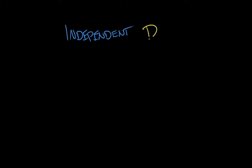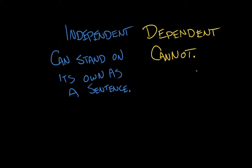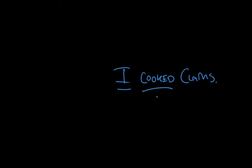Now that we know what a clause is — just a subject and a verb — we have a distinction between independent and dependent clauses. An independent clause can stand on its own as a sentence. A dependent clause cannot. So if we take our initial sentence, 'I cooked clams,' that's an independent clause. It can stand on its own as a sentence. It's got a subject, it's got a verb — nothing is standing in the way of it being perceived as its own sentence, an independent clause, and not a sentence fragment.